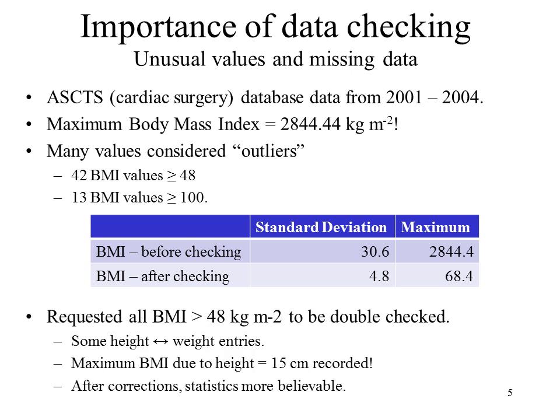The standard deviation is also much more believable after checking: 4.8 as opposed to 30.6. As a result of asking for all BMIs over 48 to be double-checked, we discovered there were some height and weight entry errors. I am 163 centimeters tall and about 60 kilograms. If you put my height and weight into the calculation the wrong way around, I end up with a body mass index of over 500 instead of about 22. We also discovered that the maximum BMI of 2800 was due to a height of 15 centimeters being recorded — so while we were waiting for all the data to be checked, it became the running joke: has Tom Thumb been corrected yet? After corrections, the statistics were a lot more believable.